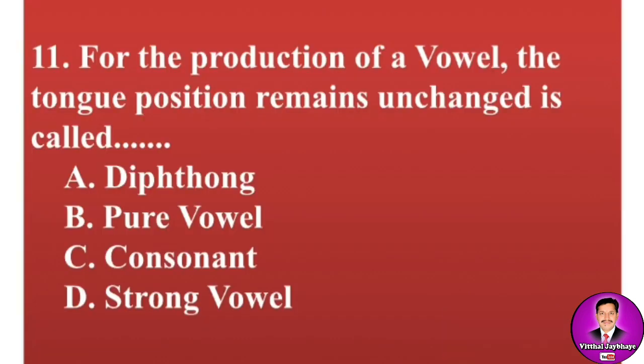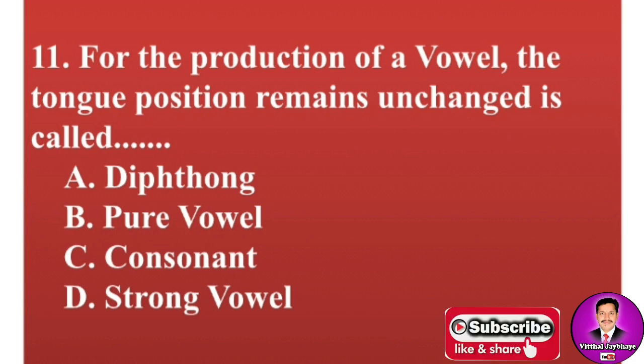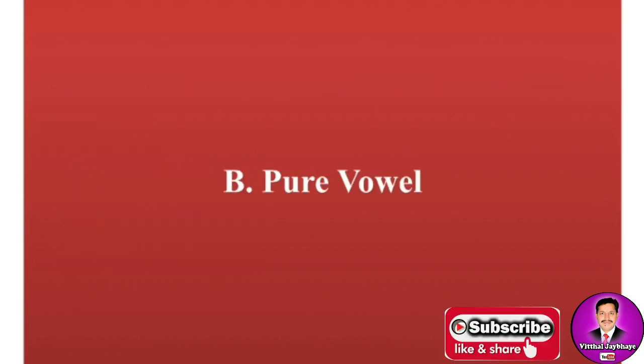Next MCQ: For the production of a vowel, the tongue position remains unchanged — this is called: A, diphthong; B, pure vowel; C, consonant; D, strong vowel. The correct answer is B — pure vowel.